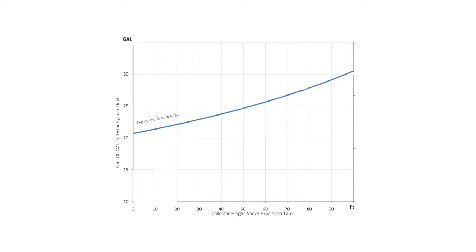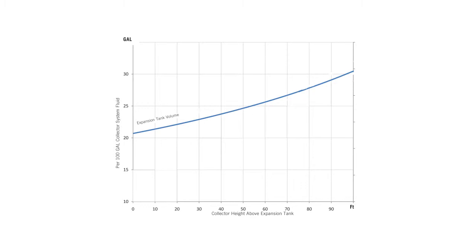This chart, also found in the Heliodyne HCOM Manual, can be used to help determine expansion tank size. For example, if the collectors are 50 feet above the expansion tank, then the expansion tank should be sized to allow 25 gallons for every 100 gallons of total system volume, or 25 percent. This chart will also be used in the installation process to help determine initial fill pressure according to collector height and fluid temperature. For systems with height differences greater than 100 feet, please contact Heliodyne or your solar design engineer for further guidance.